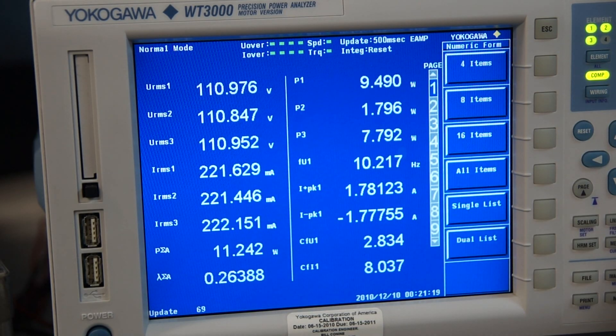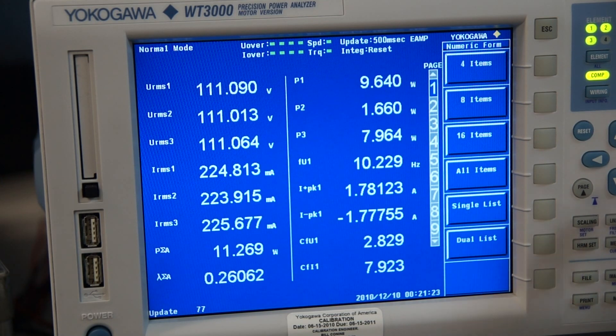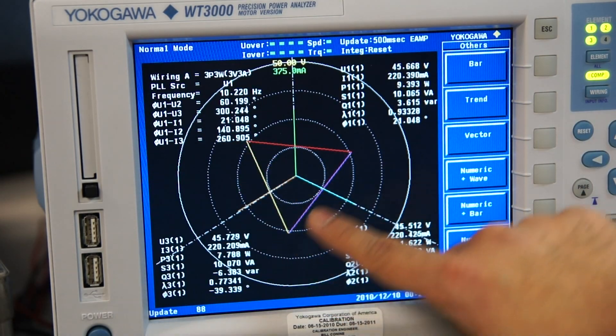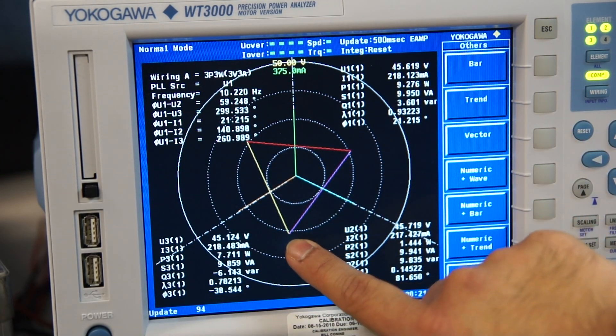Now another way you can verify on the power analyzer if your wiring is correct is you go back to the vector display on this meter, and you should be able to see your delta connection on your voltage, which is what we see here.